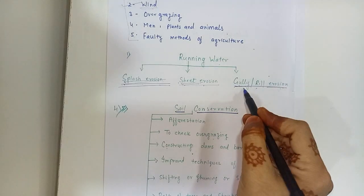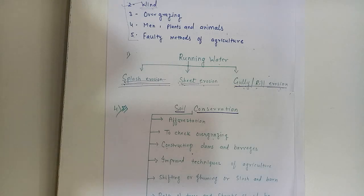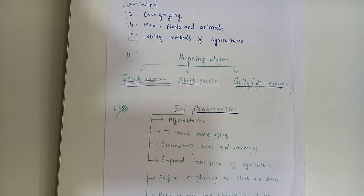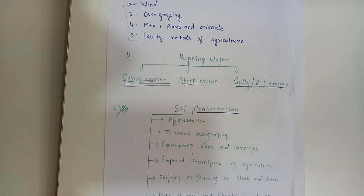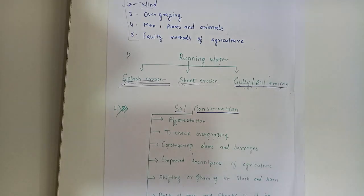Gully erosion is whereby on steep slopes, in the absence of any vegetation, water flows with force downhill, developing into a channel flow and cutting steep-sided valleys as it runs off. Because there are no barriers, no plants or trees to stop it, the water just flows and cuts steep-sided valleys. Gully erosion cuts up agricultural land into bad land where no cultivation is possible.